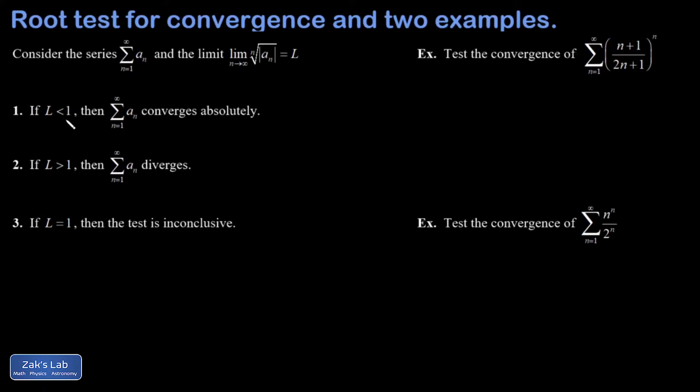If that number for the limit is less than 1, then you get absolute convergence for your series. If it's bigger than 1, you get divergence. And if it's equal to 1, you learn nothing, so the test is inconclusive.